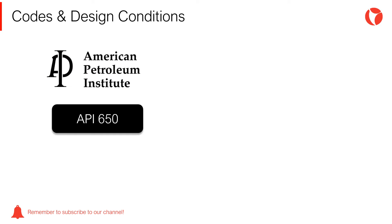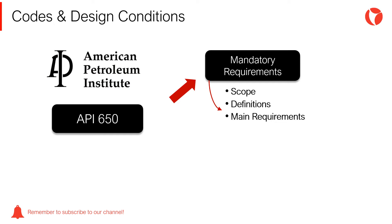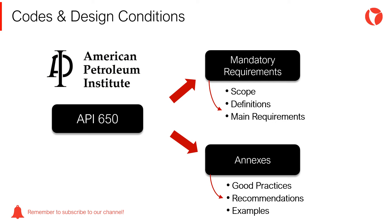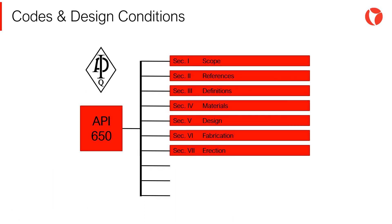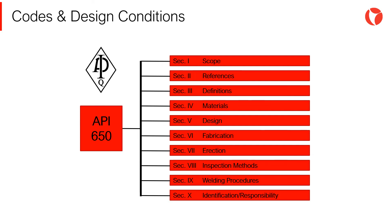The API 650 code from the American Petroleum Institute is divided into two main parts. In the first part of the code, the mandatory requirements are found, where the scope, definitions, and main contents are included. The mandatory requirements are divided into 10 sections, covering the complete fabrication and installation cycle of a tank. From the mechanical design perspective, the most relevant parts are materials, design, and fabrication.